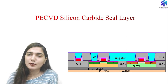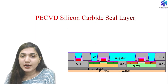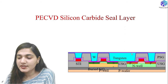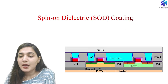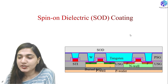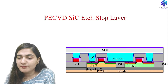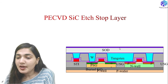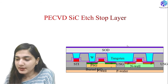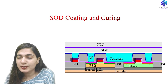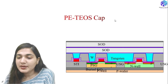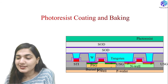For multi-layer copper interconnects, PE-CVD of silicon carbide forms a seal layer, followed by spin-on dielectric (SOD) coating and curing, then PE-CVD of a silicon carbide etch-stop layer. Another round of SOD coating and curing is done, followed by a PE-TEOS capping layer. The silicon carbide etch-stop layer serves as the endpoint for etching.